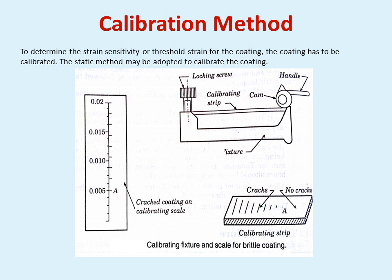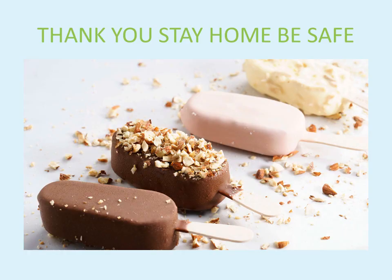The calibration method: you will be having a cantilever beam. Above the cantilever beam, the graduations have been made. On that graduation, the brittle coating is being applied. When you apply the load, the cracks will be developed and these cracks are being measured directly onto the calibrating scale. Thank you.